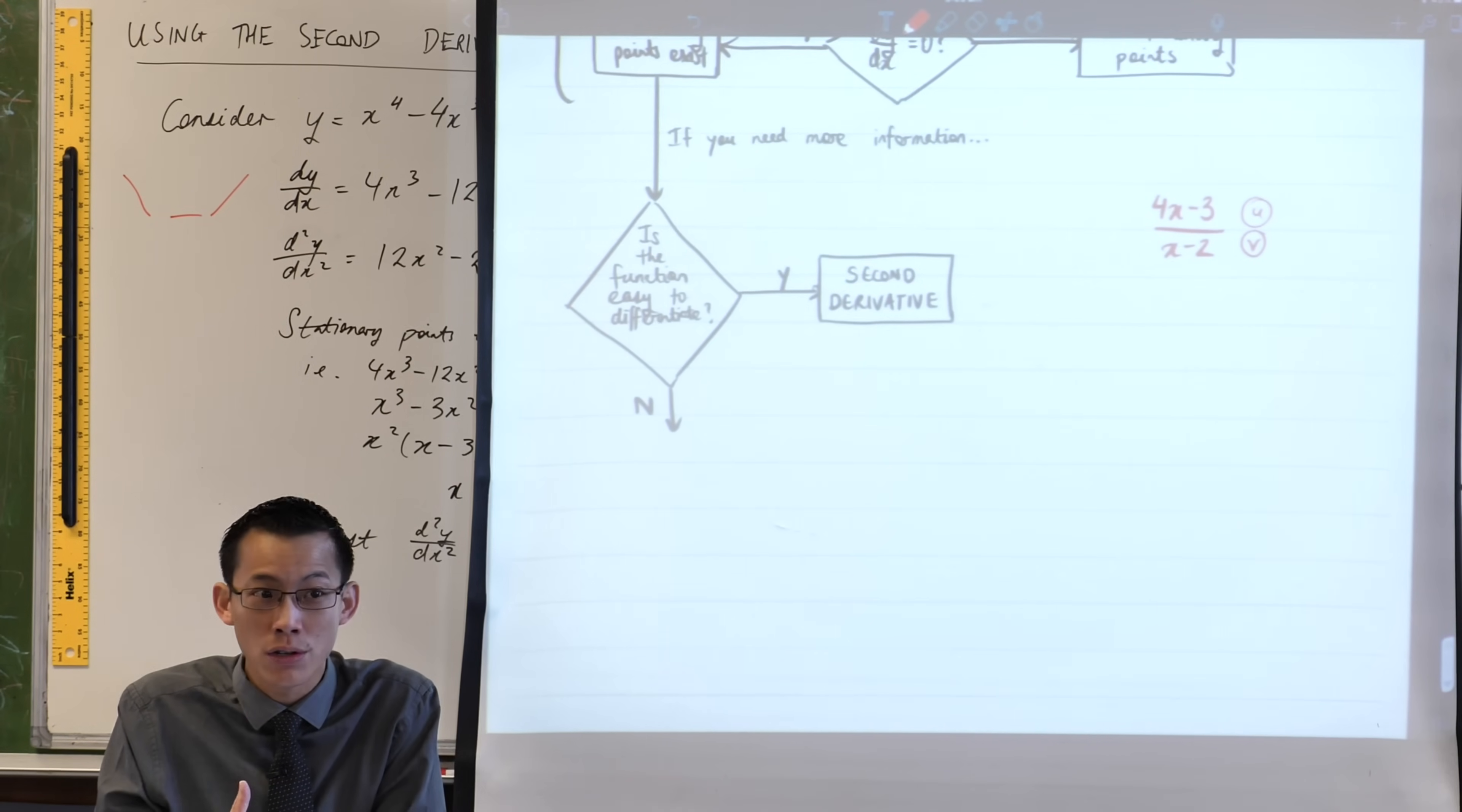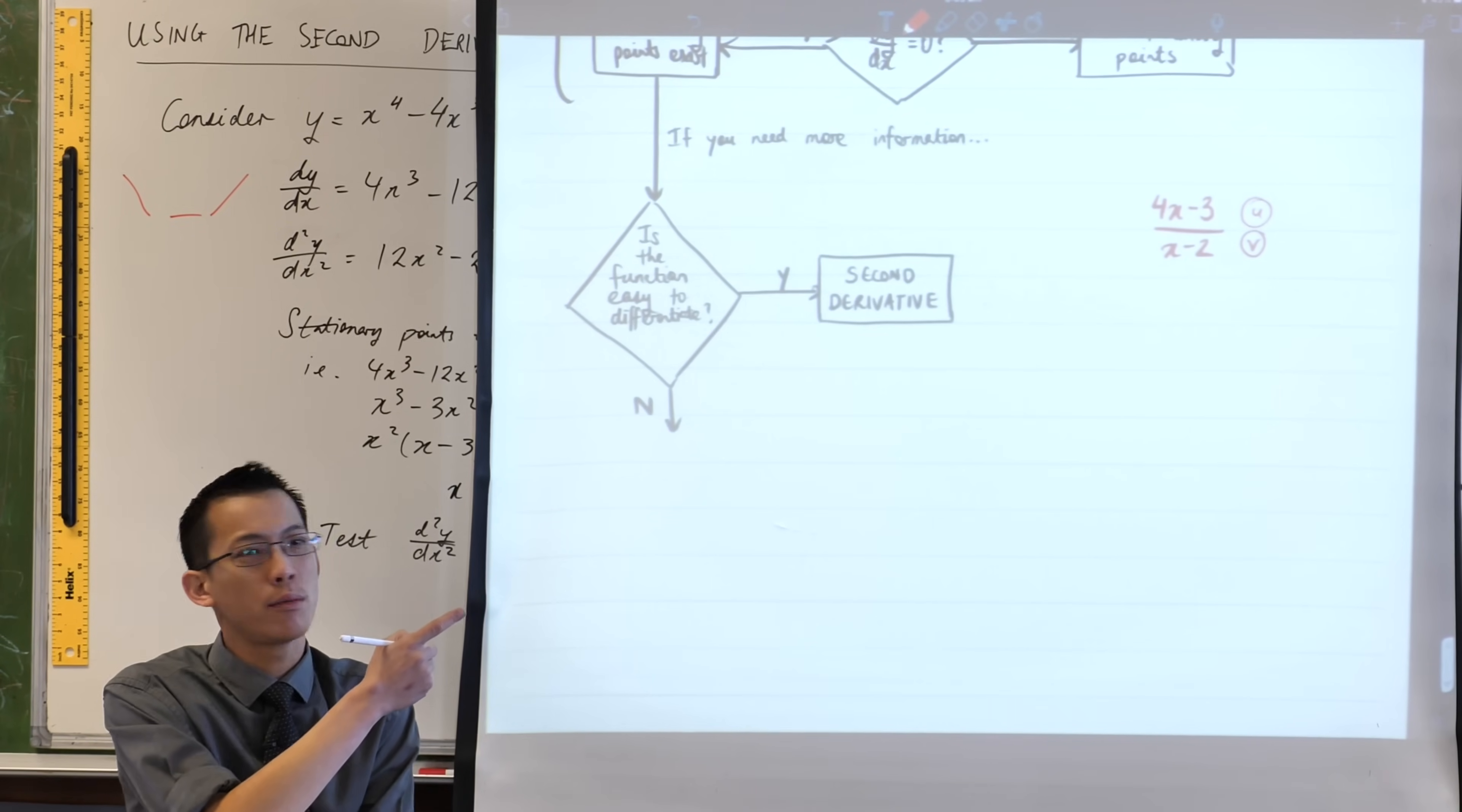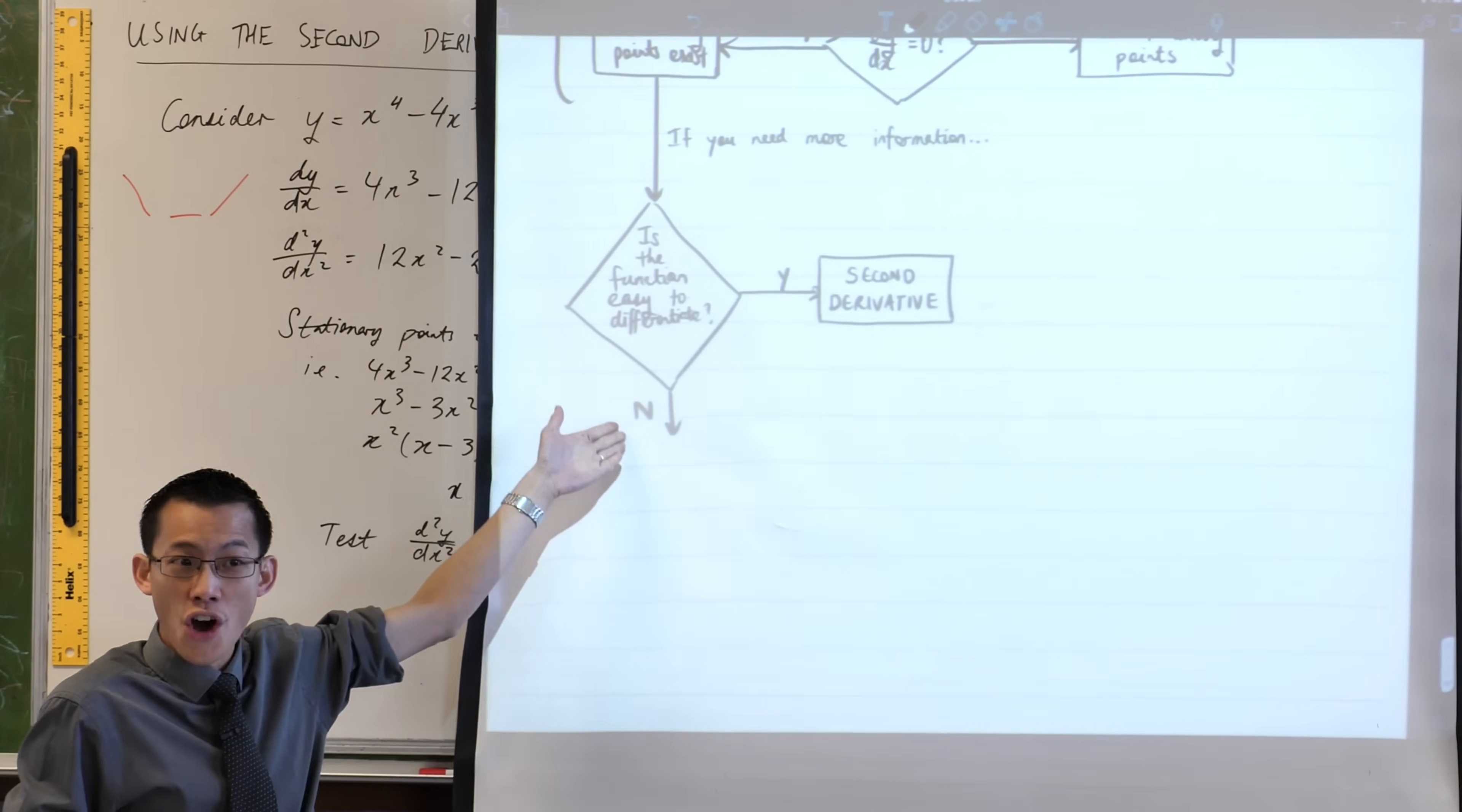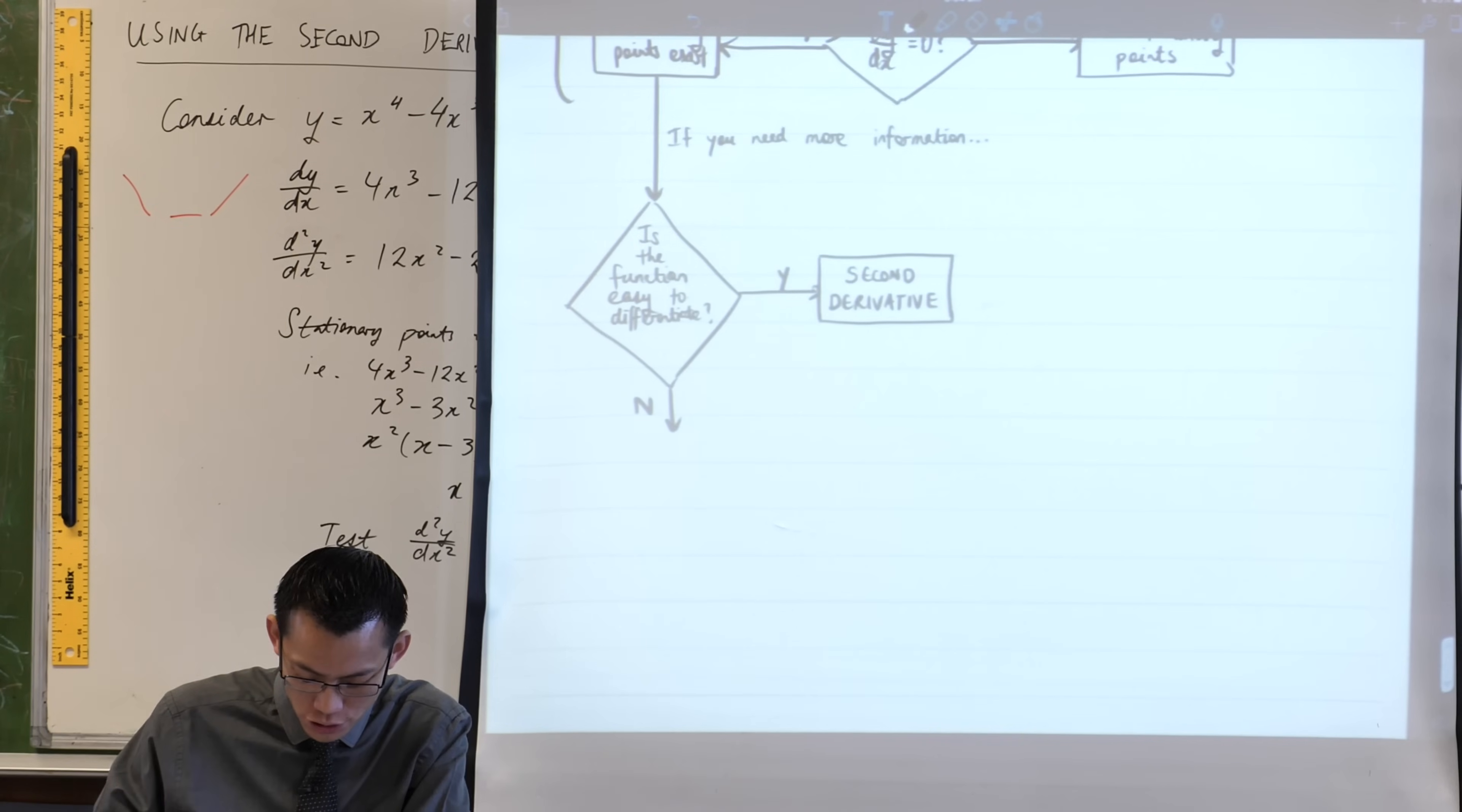When you use the quotient rule, you say that's u, that's v. What you get out of the quotient rule is another quotient, another fraction, and it gets worse. Every time you use the quotient rule, the derivative gets more and more complicated. So while it's physically possible, after I get the first derivative of that, I probably don't really want to find the second derivative because it's just going to become an algebra-laden disaster. If you say is the function easy to differentiate? No, you don't need to go to the second derivative. You go back to what we looked at before, which is your table of values for the first derivative, dy/dx.